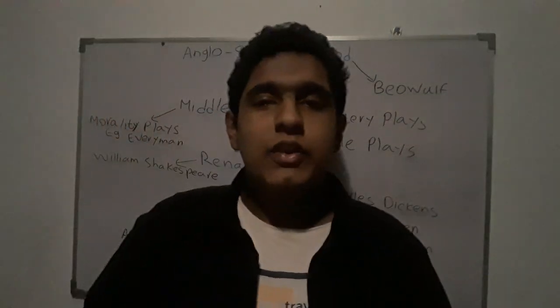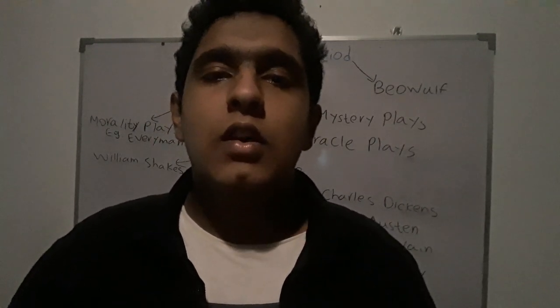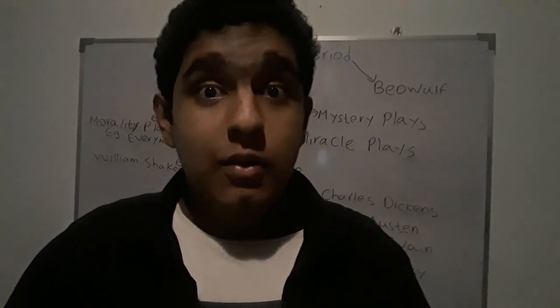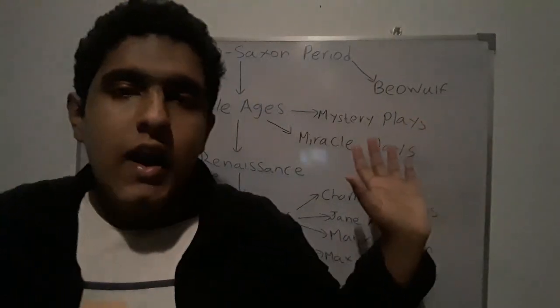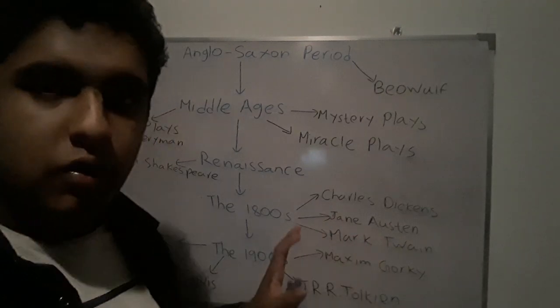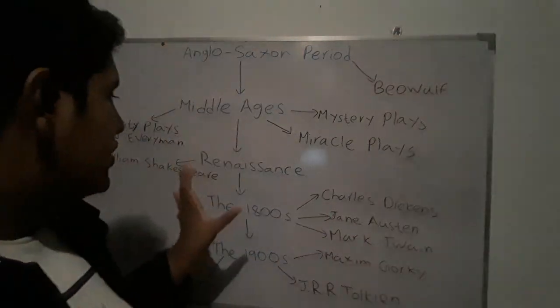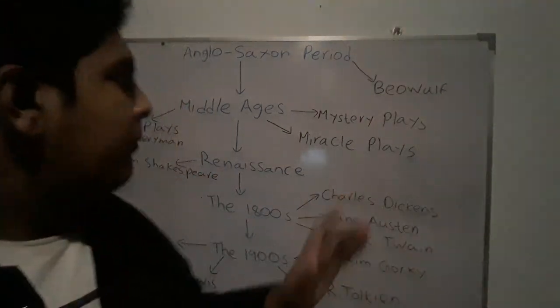Hello everyone and welcome back to the Omni Academy YouTube channel. Today I'll be teaching you a brief history on the development of English literature. The diagram behind me is really big, but it's a brief description I'm going to give of each time period. We have five time periods to discuss: the Anglo-Saxon period, the Middle Ages, the Renaissance, the 1800s, and the 1900s.